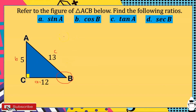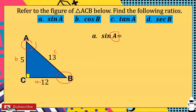First, let's find sine A. With the reference angle at angle A, sine is opposite over hypotenuse. The opposite side from angle A is 12, and the hypotenuse is 13. So sine A is equal to 12 over 13.